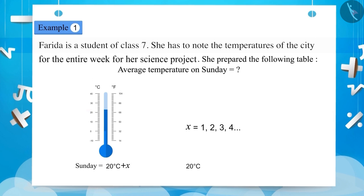But the value of 20 degrees Celsius is certain and it does not change. So, we call it a constant.